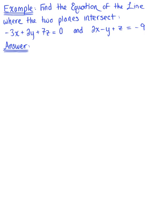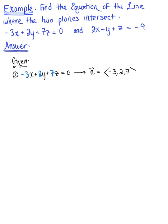Find the equation of the line where the two planes intersect. So we've got these two planes, and let's begin by thinking about their normal vectors. Plane number one is minus 3x plus 2y plus 7z is equal to zero, and the coefficients of these variables represent the components of the corresponding normal vector. So we can say that vector n sub 1, the normal vector of the first plane, has components negative 3, 2, 7.